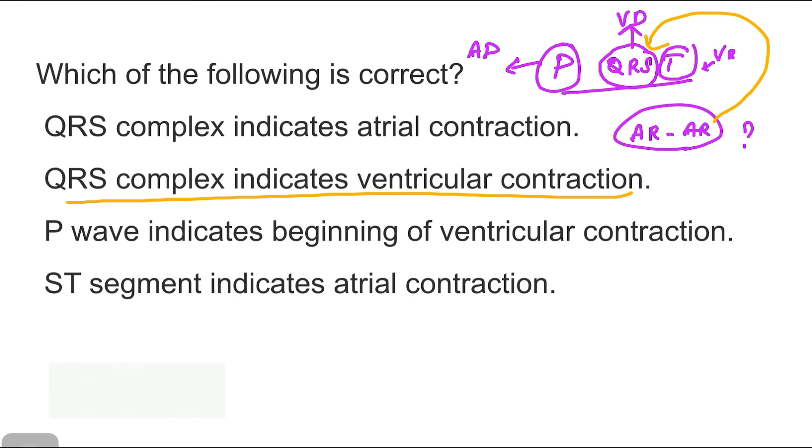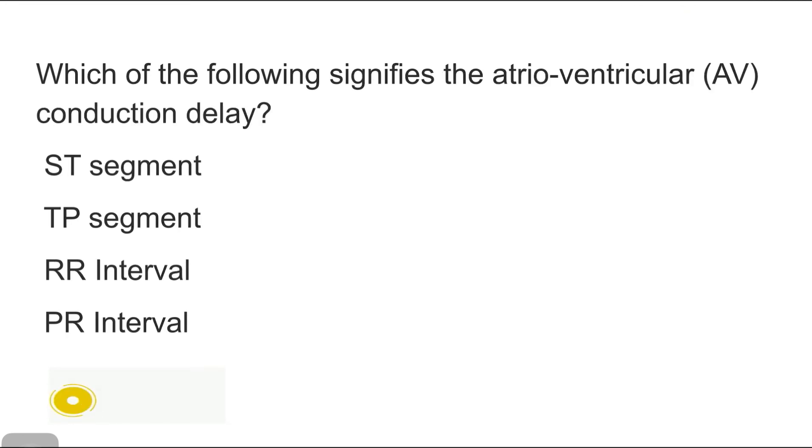We will go to the next question. Which of the following signifies the atrioventricular conduction delay? P wave occurs due to atrial depolarization. QRS complex occurs due to ventricular depolarization. Then PR interval is the time which is taken by the impulse to travel from the atrium to the ventricle to depolarize the ventricles. So if there is any delay in conduction, it should prolong the PR interval.